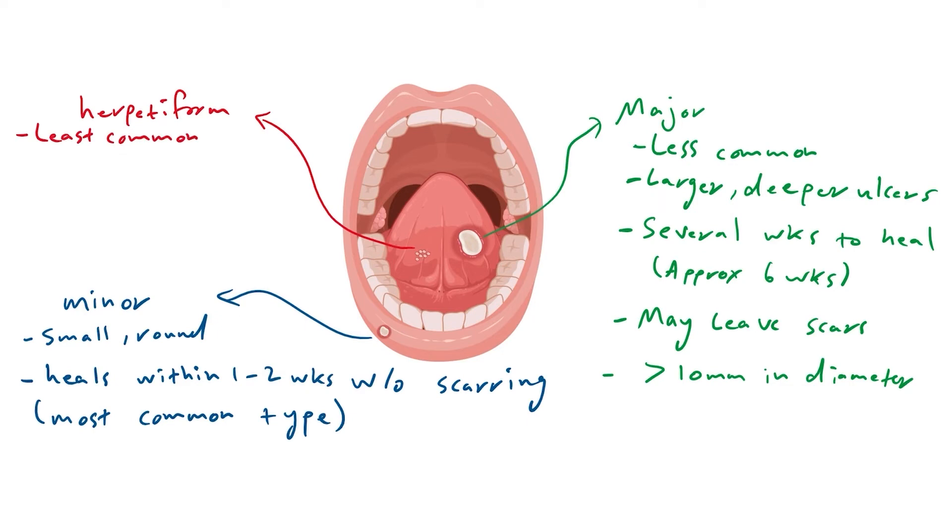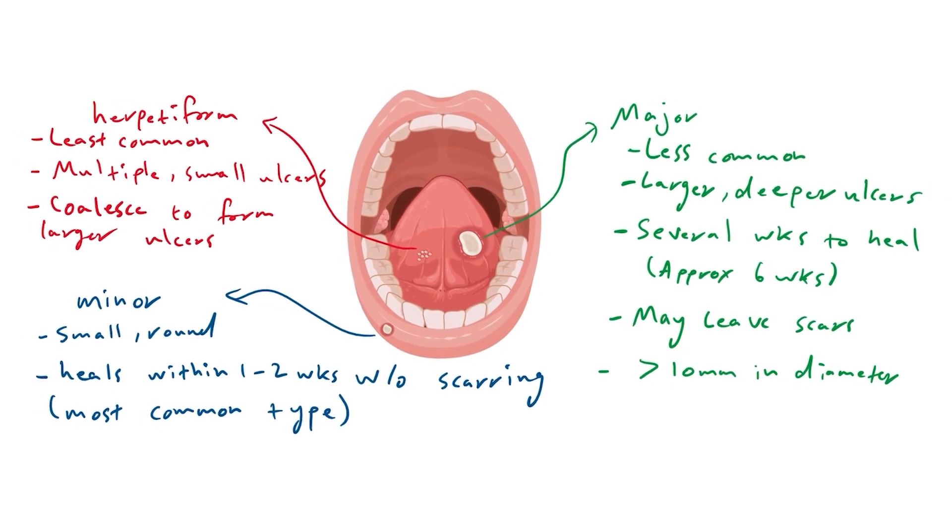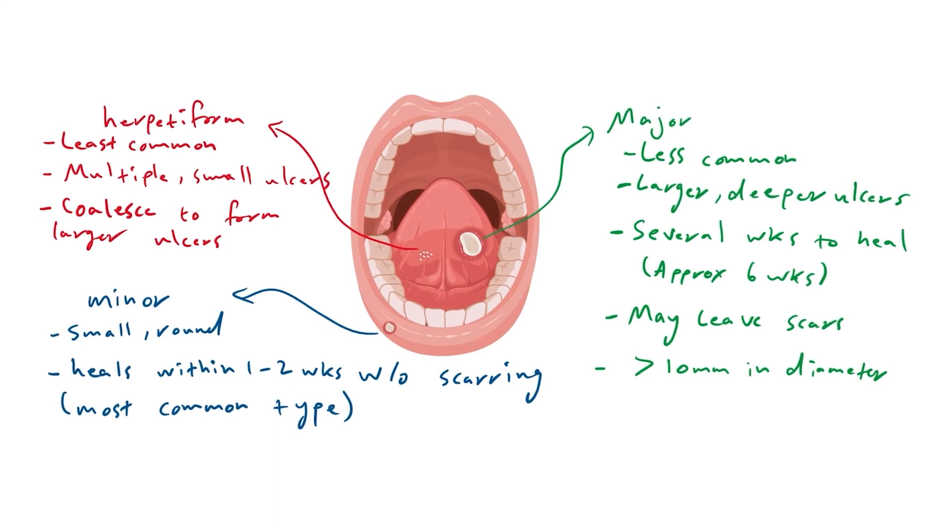Herpetiform RAS is the least common type and presents with multiple, very small, and painful ulcers that can coalesce to form larger ulcers. While it can present anywhere in the mouth, it is most commonly present on the lateral margins and ventral surfaces of the tongue.